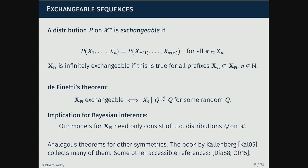De Finetti's theorem says an infinitely long sequence is exchangeable if and only if the elements are i.i.d. from some random distribution Q. There's some random distribution Q that, if I condition on it, I can sample the elements i.i.d. From a modeling point of view, we go from needing to specify an arbitrarily complicated probabilistic model on an infinite sequence to only needing to specify distributions on elements of the sequence — inference is just picking a distribution that gave rise to that sequence. There are analogous theorems for other symmetries.